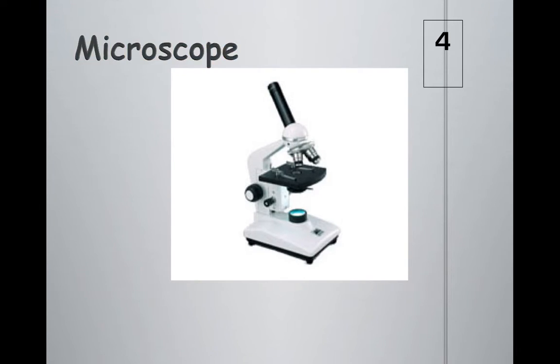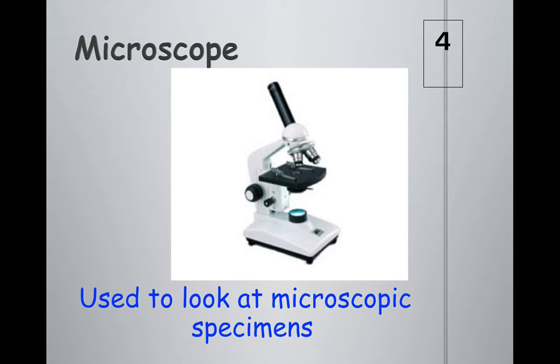For the microscope, we use it to look at smaller specimens or smaller objects or pieces of a specimen. We put them underneath the lens right here so we can look at the cellular level to see what's going on.